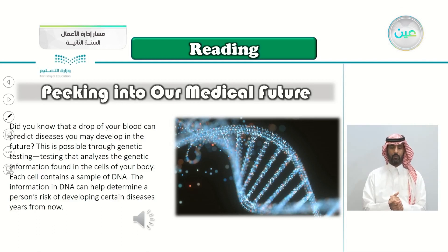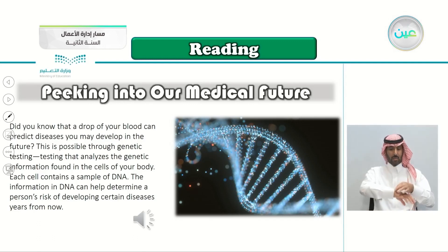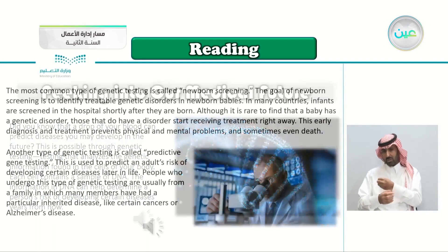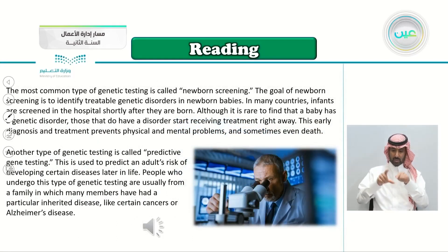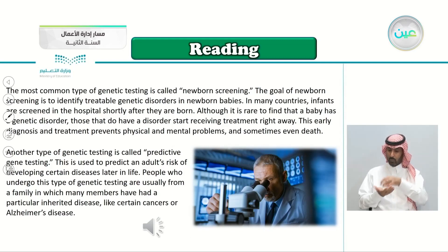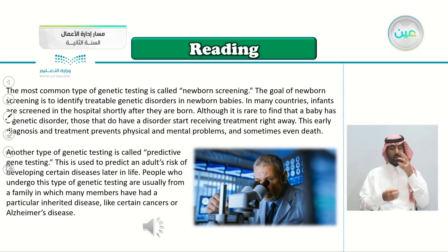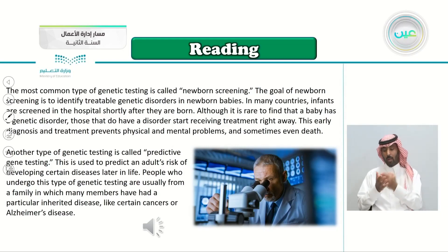Let's listen to the article together, then we will be answering some questions. Did you know that a drop of your blood can predict diseases you may develop in the future? This is possible through genetic testing — testing that analyzes the genetic information found in the cells of your body. Each cell contains a sample of DNA. The information in DNA can help determine a person's risk of developing certain diseases years from now. The most common type of genetic testing is called newborn screening. The goal of newborn screening is to identify treatable genetic disorders in newborn babies. This early diagnosis and treatment prevents physical and mental problems, and sometimes even death.